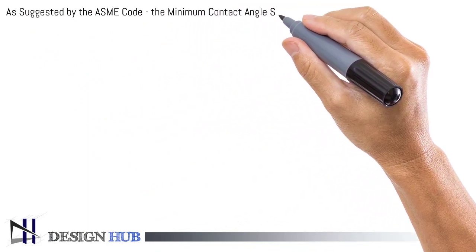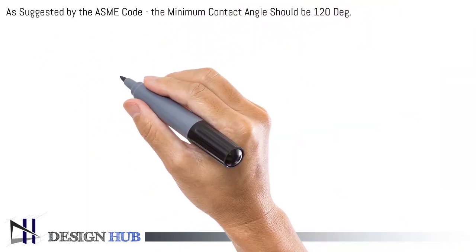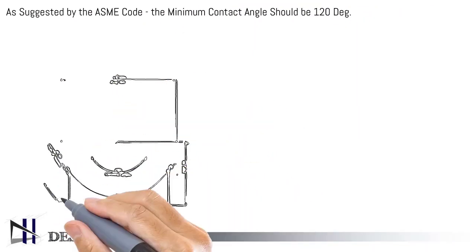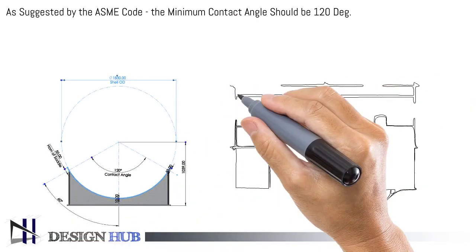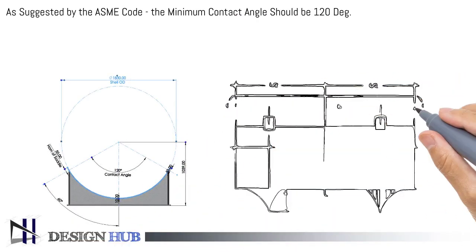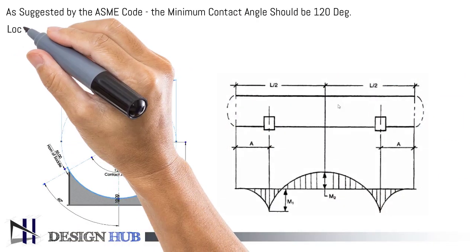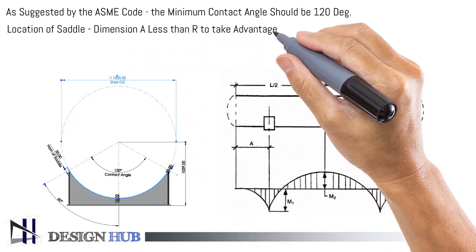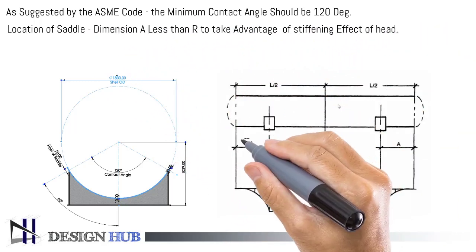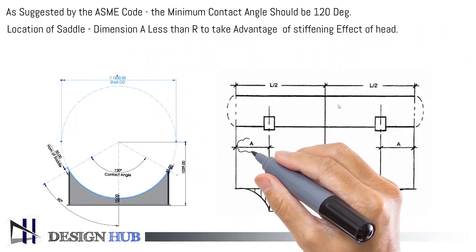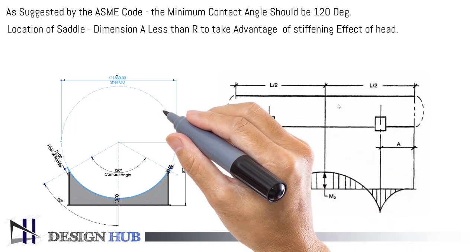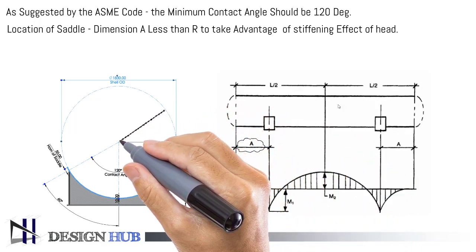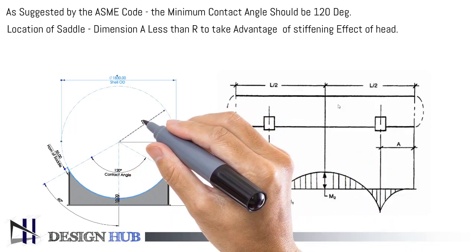As per ASME code, the minimum contact angle should be 120 degrees, and the location of the saddle must be as per below. Saddle dimension A should be lower than the radius of the shell. Dimension A is often 0.4 times the radius of the shell.